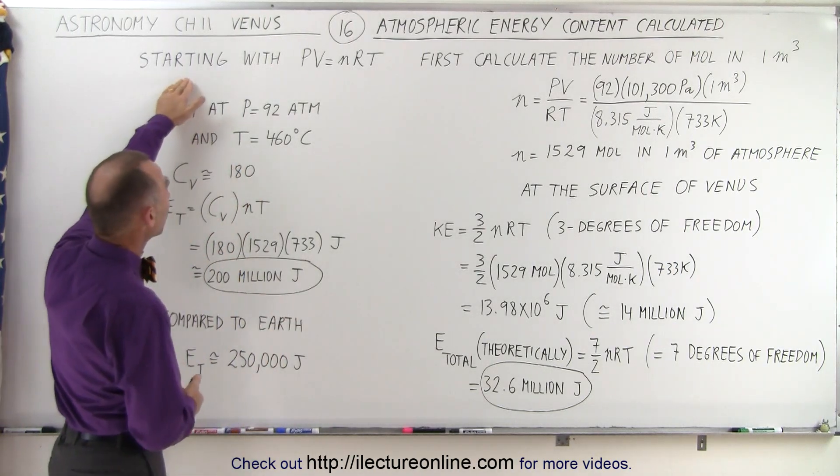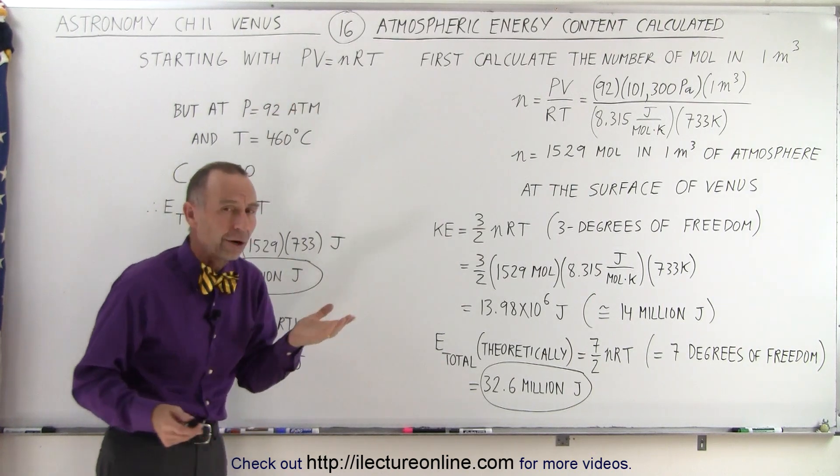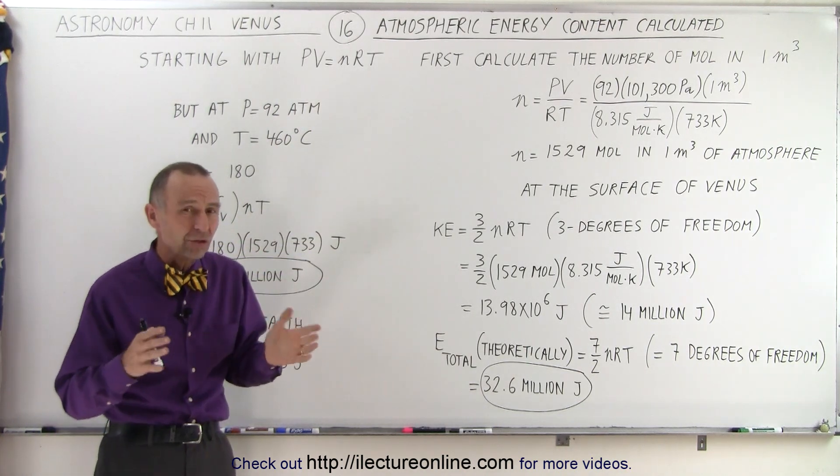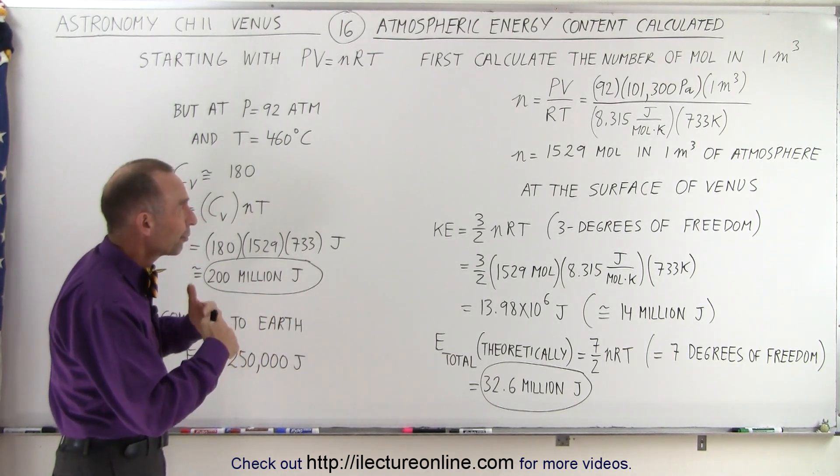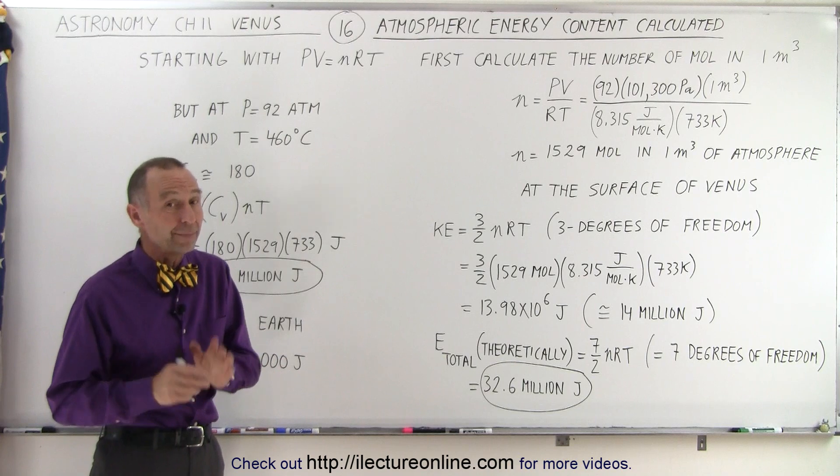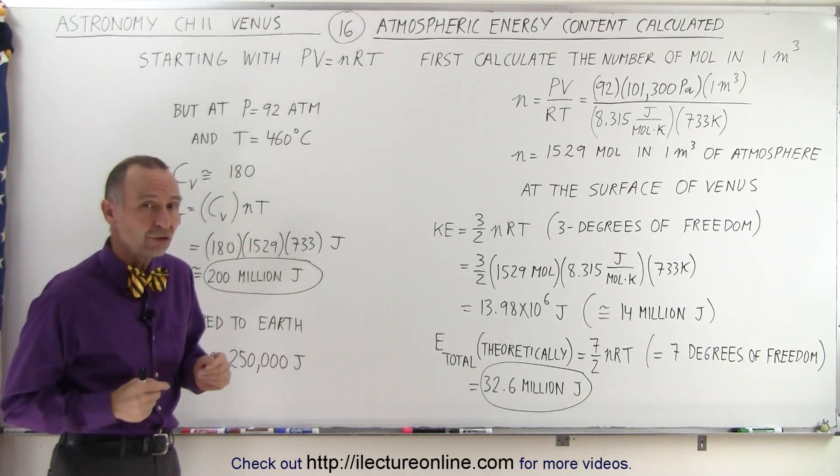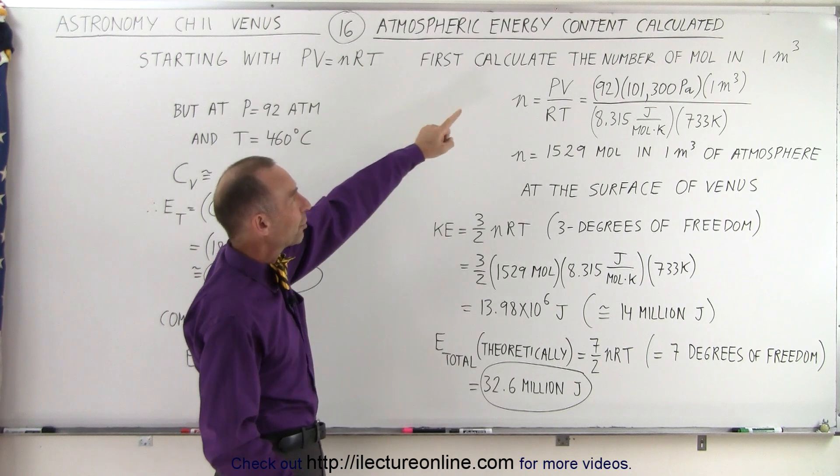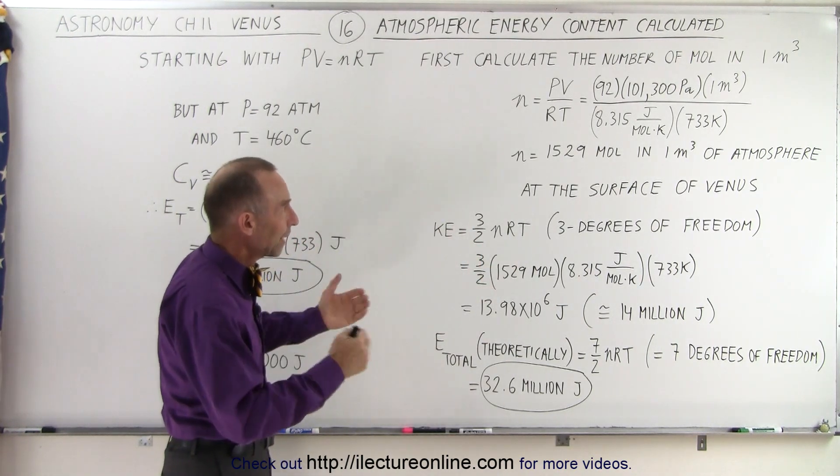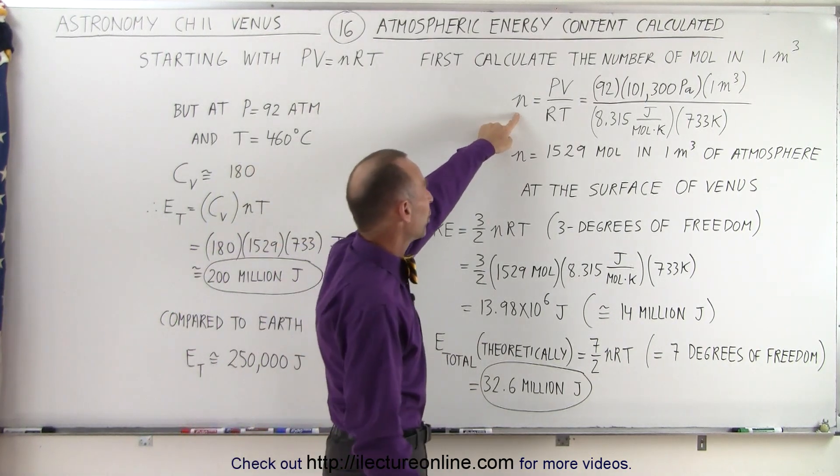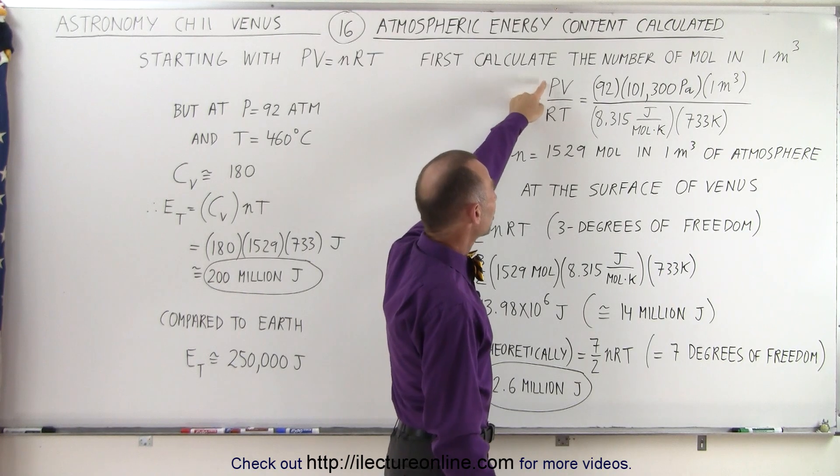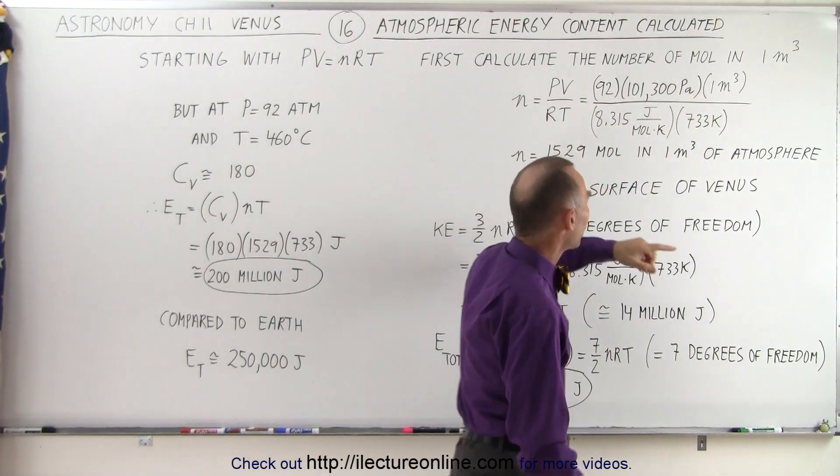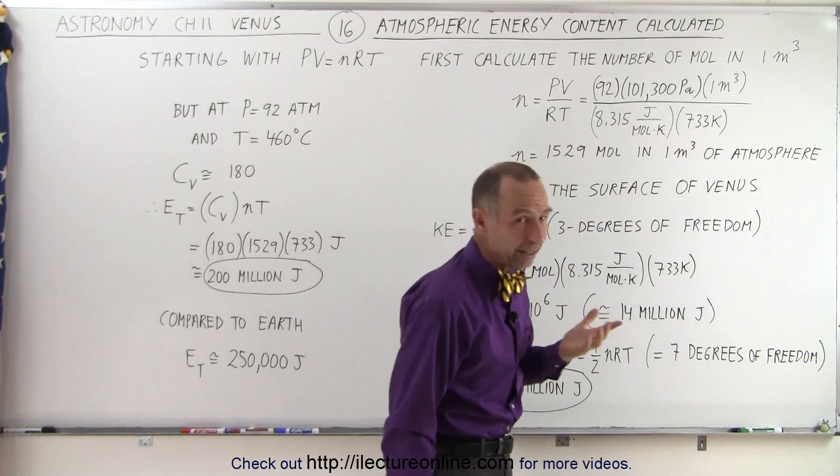So what we need to do here is start with the ideal gas equation, PV equals nRT. Now realize that when the pressure reaches something like 92 atmospheres, the ideal gas equation doesn't quite meet what we need. But for approximation, it's probably good enough. And besides, we're going to adjust for the additional pressure when we calculate the specific heat of the atmosphere. So what we're going to do first then is calculate the number of moles in one cubic meter in the atmosphere of Venus right near the surface. So we solve that for n, which is the number of moles. We multiply the pressure times the volume and divide by the gas constant and the temperature in Kelvin of 733.